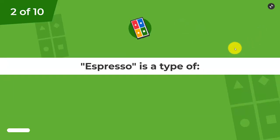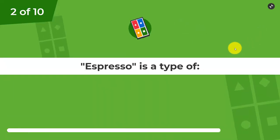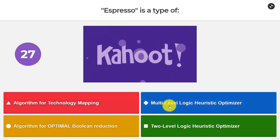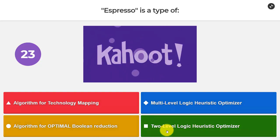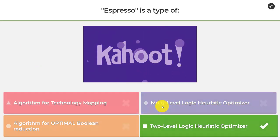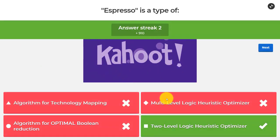Question number two: Espresso is a type of — besides something I like to drink — an algorithm for technology mapping, a multi-level logic heuristic optimizer, an algorithm for optimal Boolean reduction, or a two-level logic heuristic optimizer. I think I know the answer: a two-level logic heuristic optimizer.